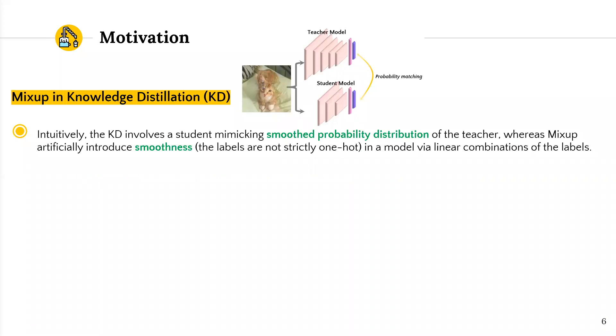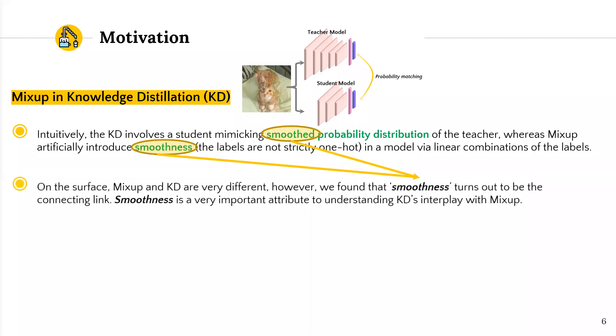Intuitively, the student learns from the smooth probability distribution over the teacher, whereas mix-up tries to artificially inject smoothness into the label by mixing two examples and their labels. So, on the surface, mix-up and KD are very different. However, we found that smoothness turns out to be a connecting link, which is a very important attribute to understanding KD's interplay with mix-up.